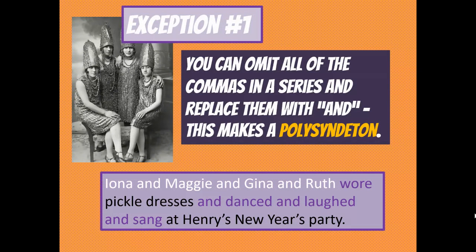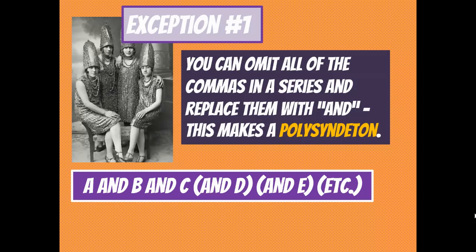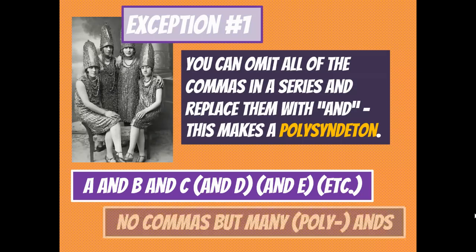For example: 'Iona and Maggie and Gina and Ruth wore pickle dresses and danced and laughed and sang at Henry's New Year's party.' Those are two examples of a polysyndeton — a list where instead of putting commas between each item, you put the word 'and.' That's where we get 'poly,' meaning many, so you have many ands: A and B and C and D and E, etc. No commas, just many ands.